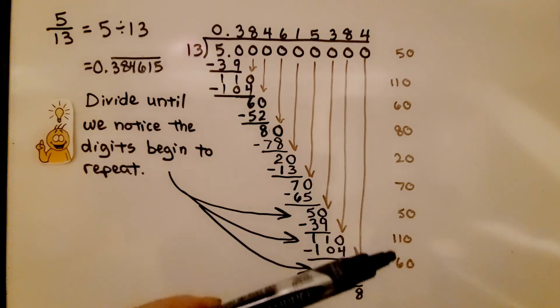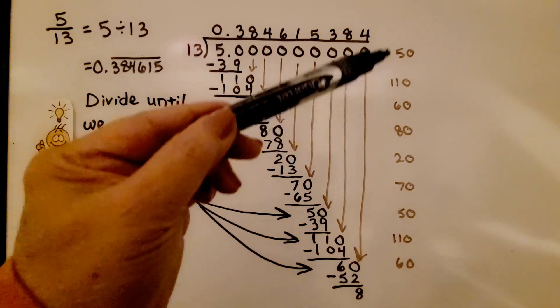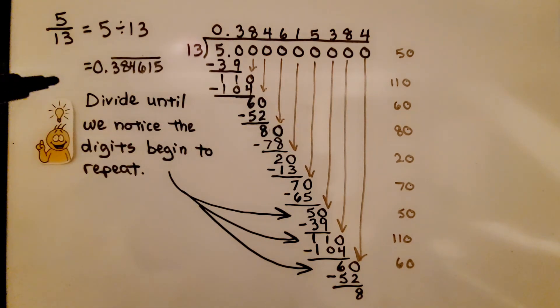50, 110, 60, just like up here. So we know that this is a repeating decimal. We can write it with a bar above the digits that are repeating.